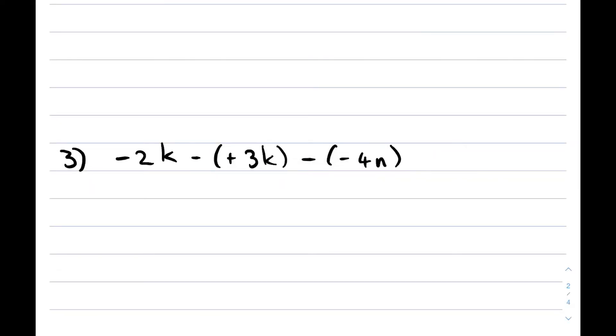For example three, what you need to realize here is that something else is going on. You have something right outside the bracket. So if you have something right outside a bracket it means that you need to distribute it with everything inside the bracket. So let's first do that. We're going to keep this -2k, and we're going to say a negative times a positive 3k is -3k, and then a negative times a negative 4n is a positive 4n.